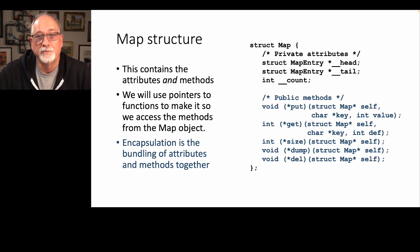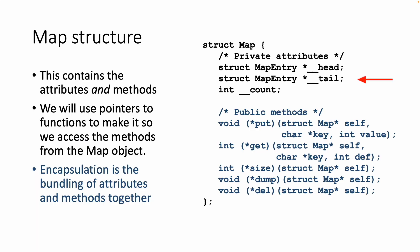The map structure looks pretty simple. We have a head, a tail, and a count — you've been maintaining those for some time. Those are private attributes, renamed with double underscores in front of them. Then we have a series of five public methods. The key thing is these are pointers to functions — void star, parentheses star put. That means we're allocating a variable in the structure named put, and it is a function pointer that will return a void.